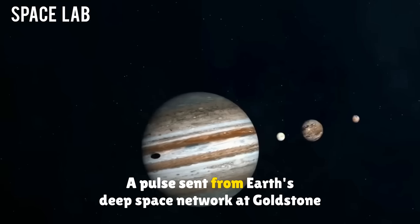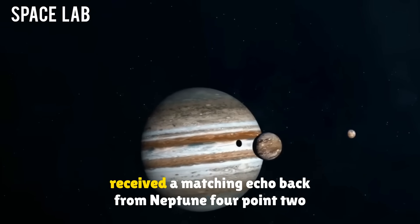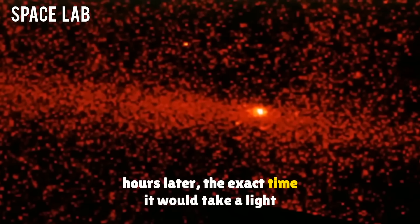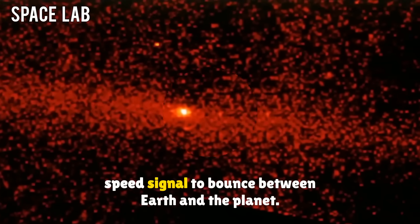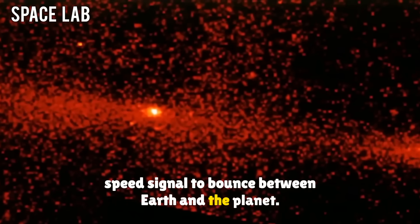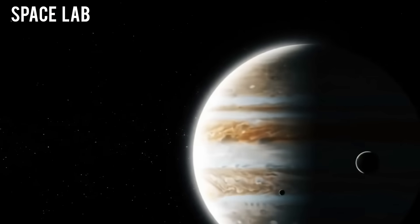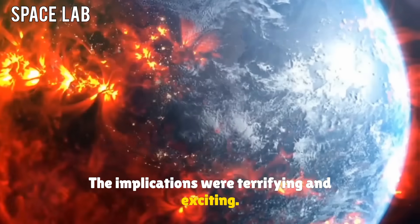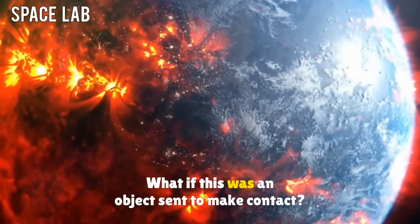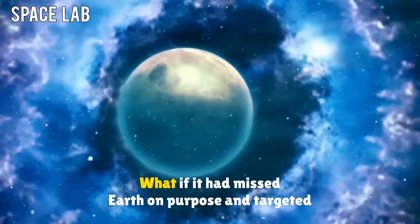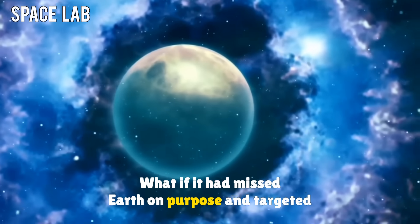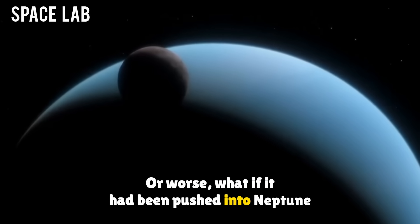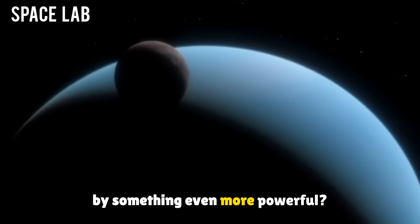More importantly, it responded to Earth's probe pings. A pulse sent from Earth's deep space network at Goldstone received a matching echo back from Neptune 4.2 hours later, the exact time it would take a light-speed signal to bounce between Earth and the planet. It wasn't just random. It had timing. The implications were terrifying and exciting. What if this was an object sent to make contact? What if it had missed Earth on purpose and targeted Neptune instead? Or worse, what if it had been pushed into Neptune by something even more powerful?